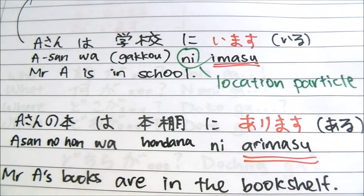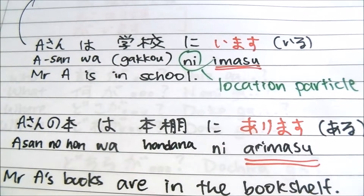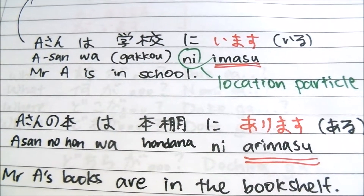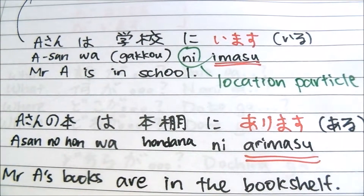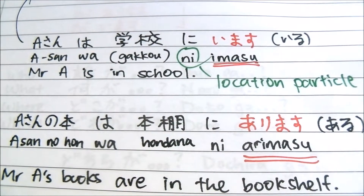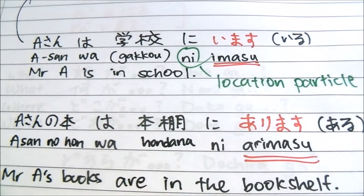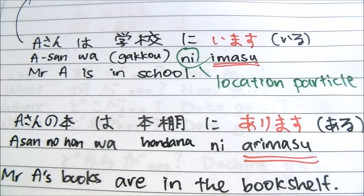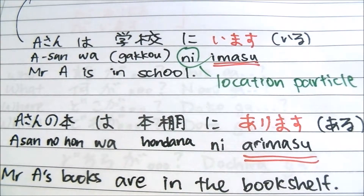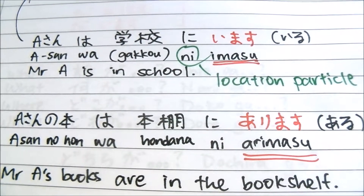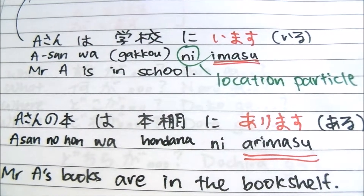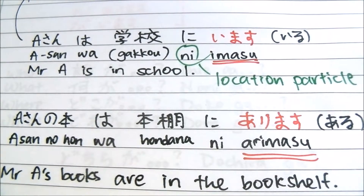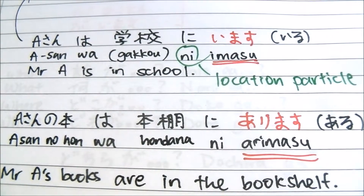'Ni' means 'in' or 'at' — it's basically a location particle. So this is a 'ni' particle. There's also another version which is 'de', and we'll talk about that in a separate video. But let's just take a look at the word 'imasu'.